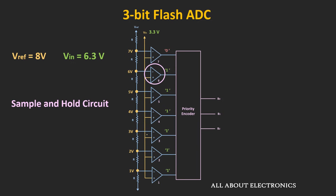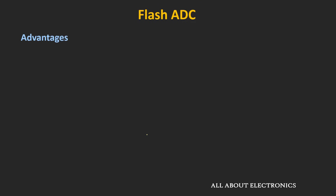In the Flash ADC, as all the comparators compare the input simultaneously, it is also known as the Parallel ADC. Due to this parallel conversion, it is the fastest among all other ADCs. Commercially available Flash ADCs can convert the signal at the rate of Giga samples per second.